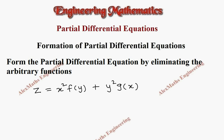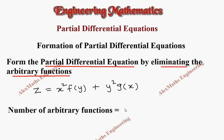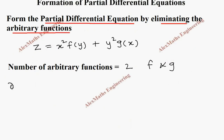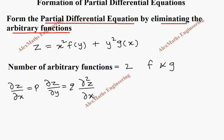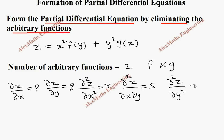Hi students, this is Alex here. In this video we are going to form a partial differential equation by eliminating the arbitrary functions. We find the number of arbitrary functions present are two — function f and g. We are going to use dou z by dou x (named as p), dou z by dou y (named as q), dou square z by dou x square (named as r), dou square z by dou x dou y (named as s), and dou square z by dou y square (named as t) — all to eliminate the arbitrary functions.